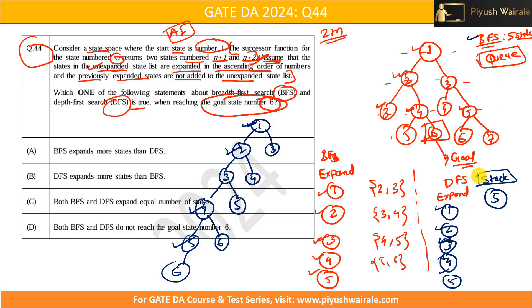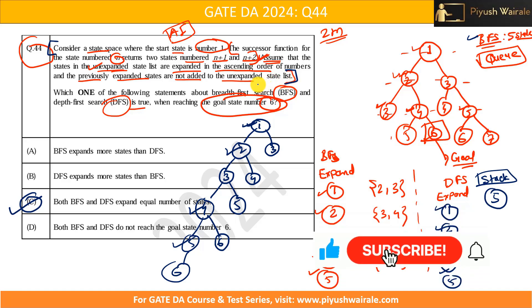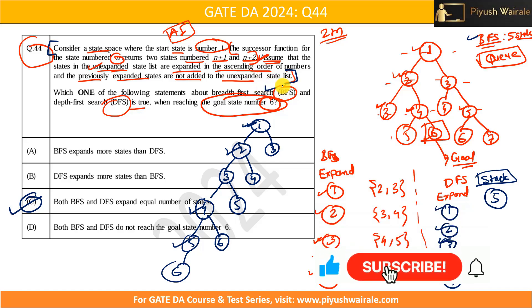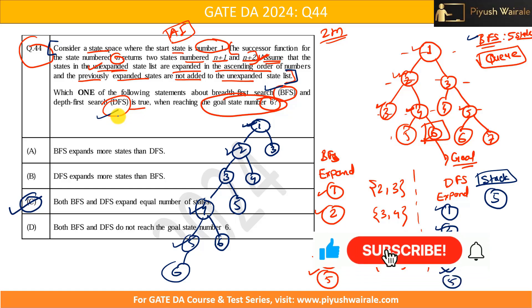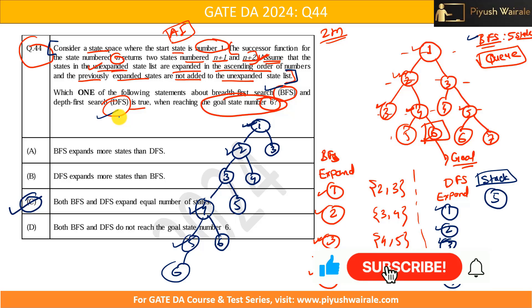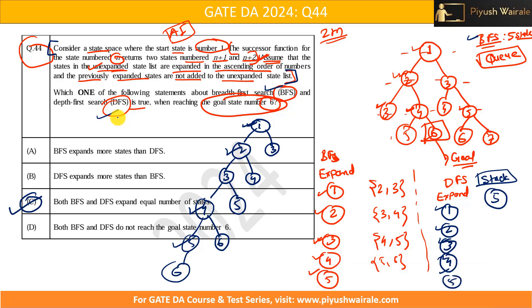In both cases, BFS and DFS required an equal number of states — 5 — to expand before reaching the goal. So option C is correct. The key to this question is reading carefully what is given and knowing how BFS and DFS work. I hope you understand this solution. That's it for this video, thank you.